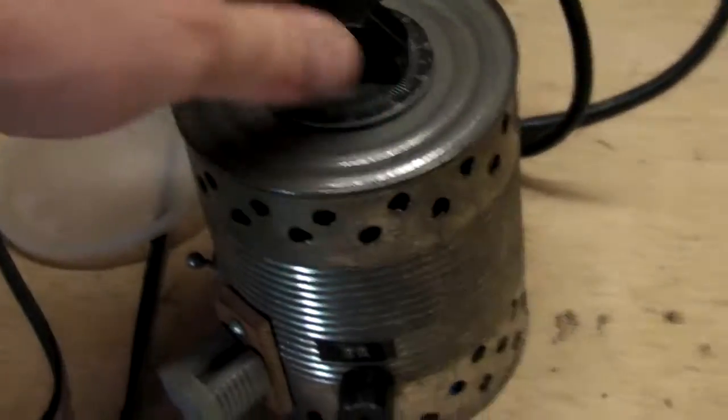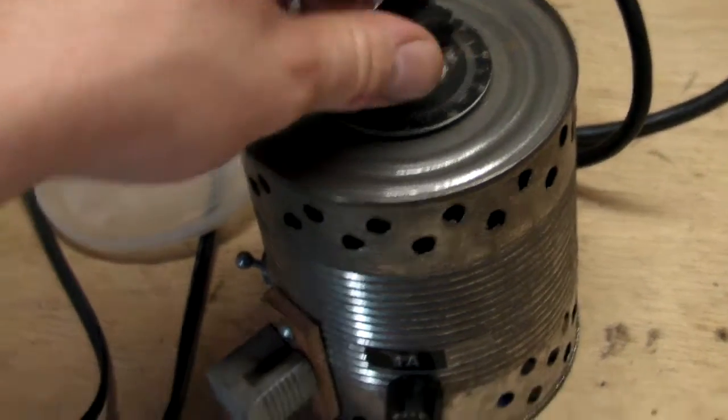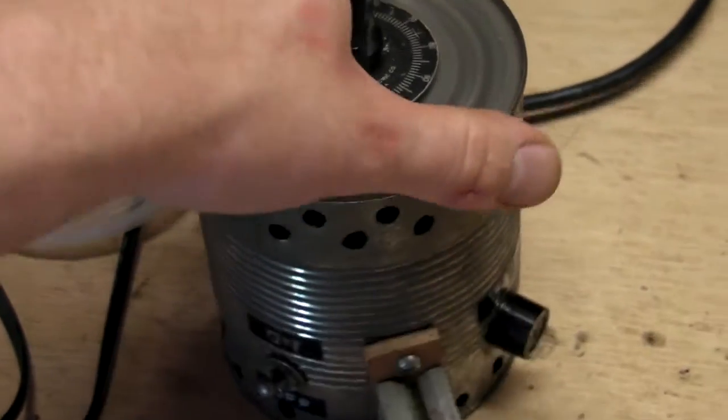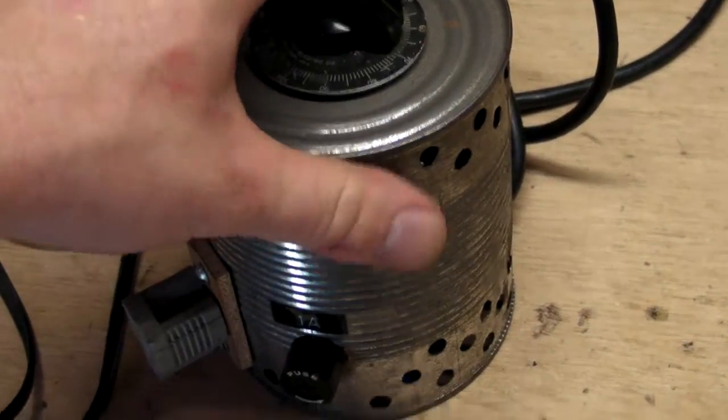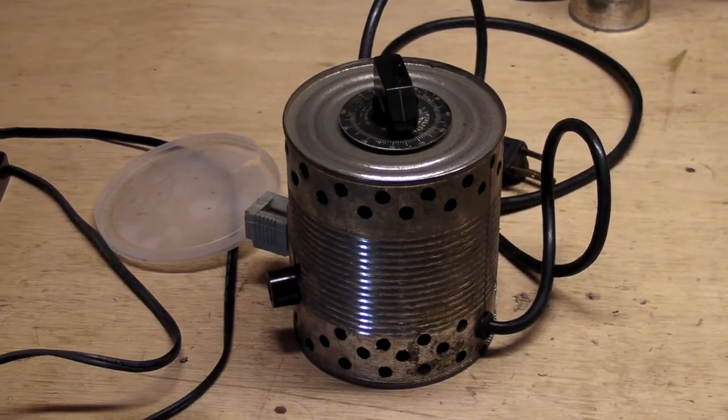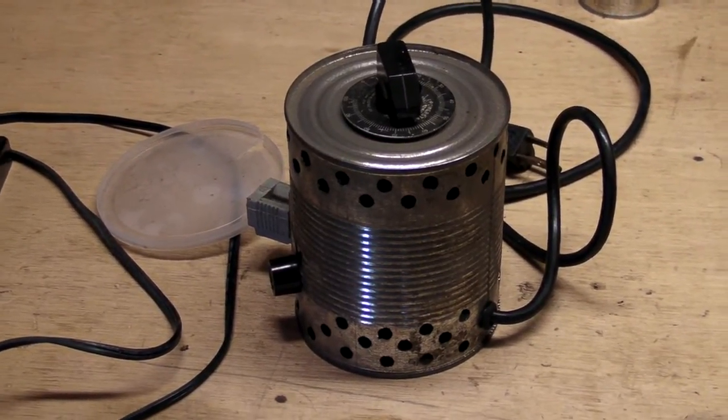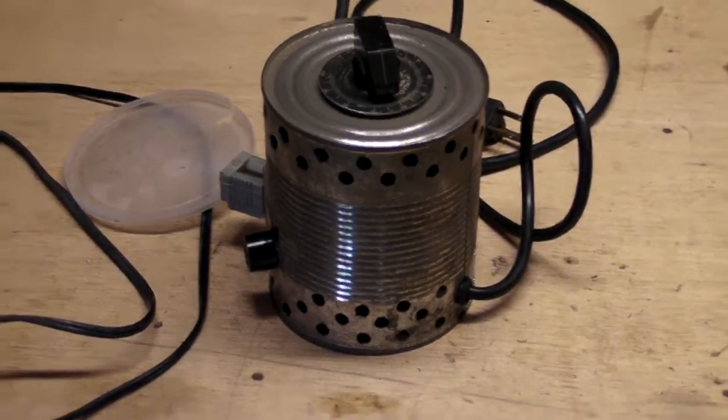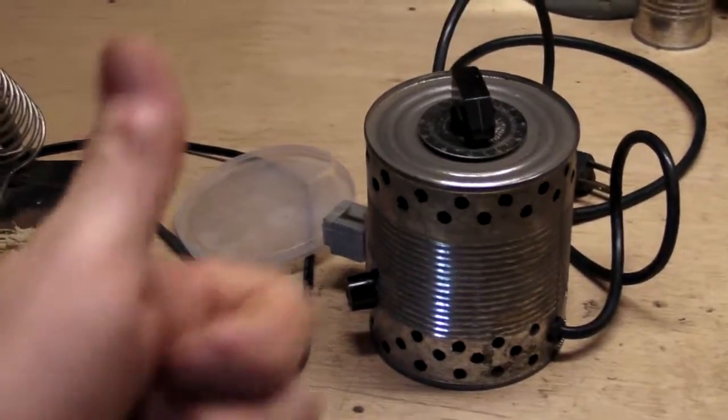In case I do use it for other things that might require two amps. But looks like I put a one amp fuse on there. Anyway, that's my variable AC coffee can power supply. Thanks for watching, see you later.